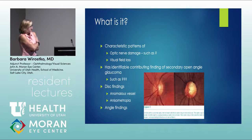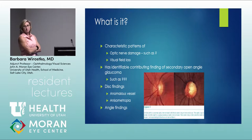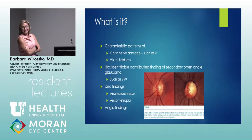Secondary glaucoma has identifiable contributing findings. The difference between primary and secondary is that in secondary there's a known mechanism likely causing optic nerve damage or elevated IOP, whereas primary is by definition idiopathic — no underlying cause can be found.